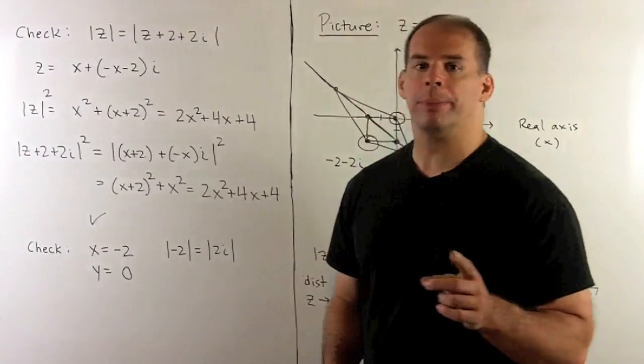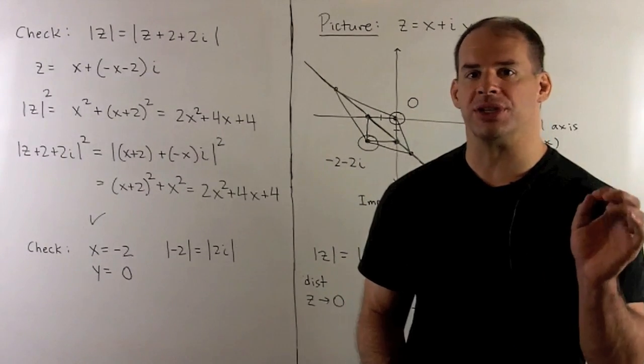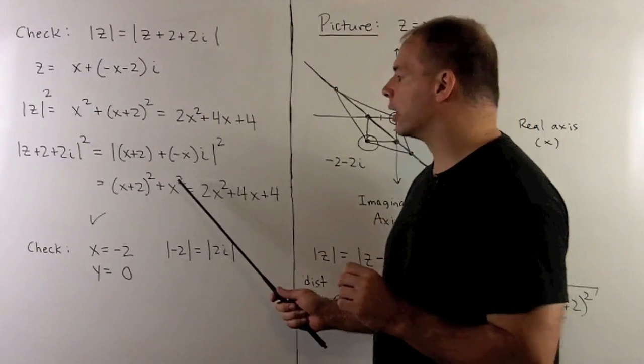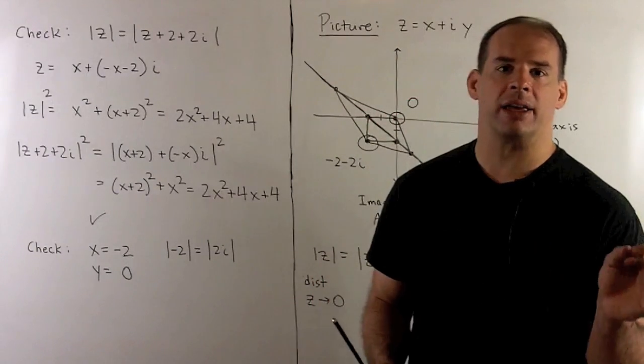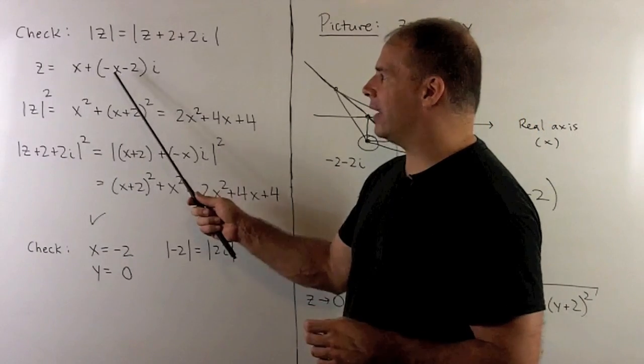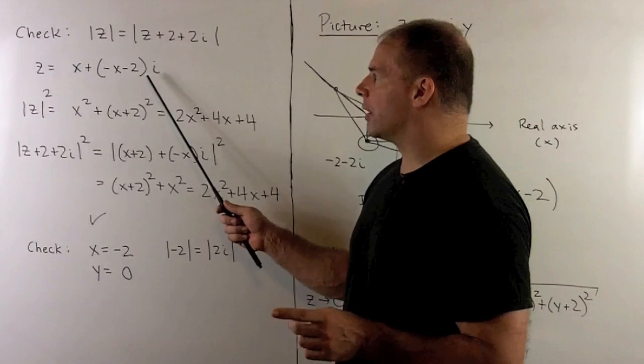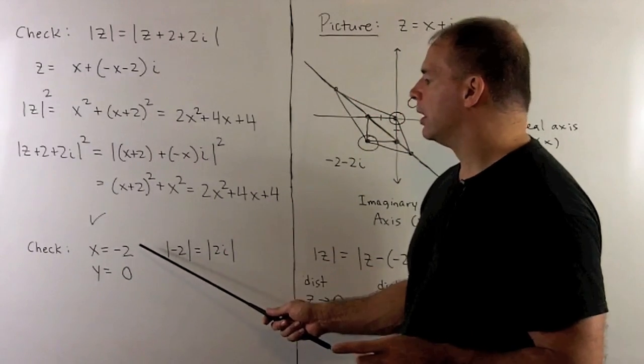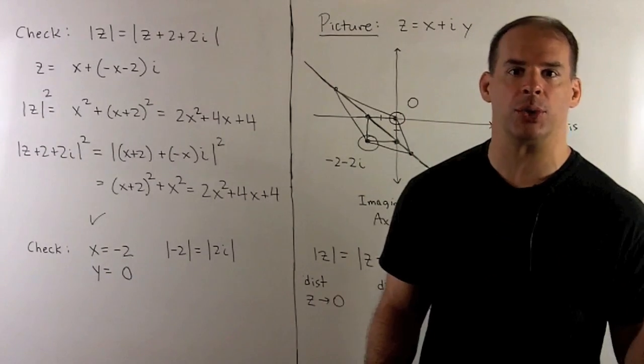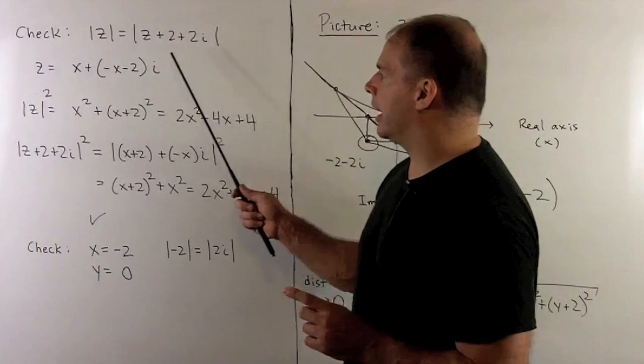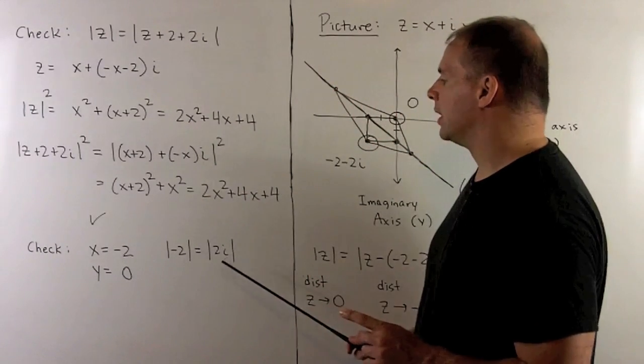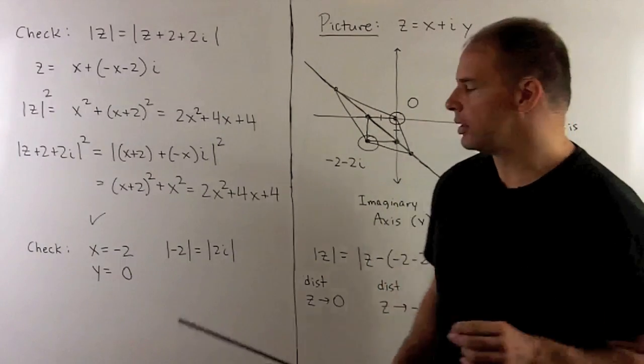Since these squares are equal, because the modulus is always greater than or equal to 0, that means the moduli are equal. So that checks our work. If we check at a specific point, say I let x be equal to -2, then the y value is going to be equal to 0. So that's just going to give me the point -2. We take the modulus of -2, it's going to be the same as the absolute value, so I just get 2 out. Take the modulus of, okay, so we're going to put -2 in here. That'll leave me with the modulus of 2i, and then that's equal to 2 also. So this checks.